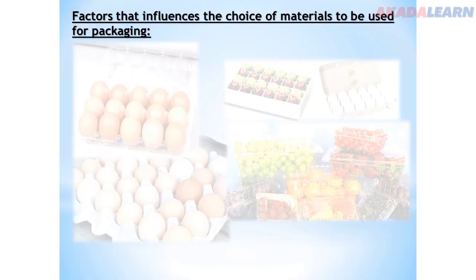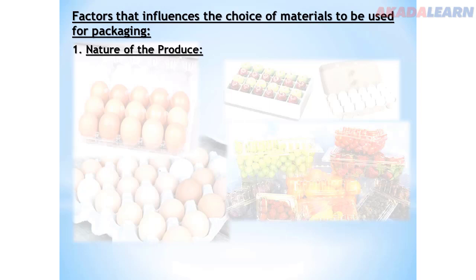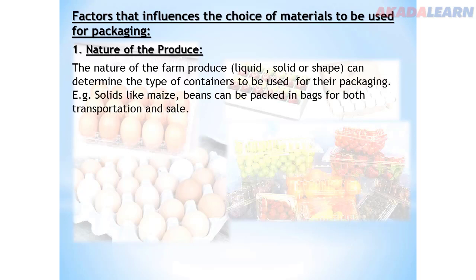Factors that influence the choice of materials to be used for packaging — we can also consider this as packaging criteria. Number one: nature of the produce. Different packaging materials would be needed for produce that are either liquid, solid, perishable or non-perishable. The nature of farm produce can determine the type of containers to be used. For example, solid produce like maize can be packed in bags, while produce like palm oil in liquid form can be packaged in a bottle.